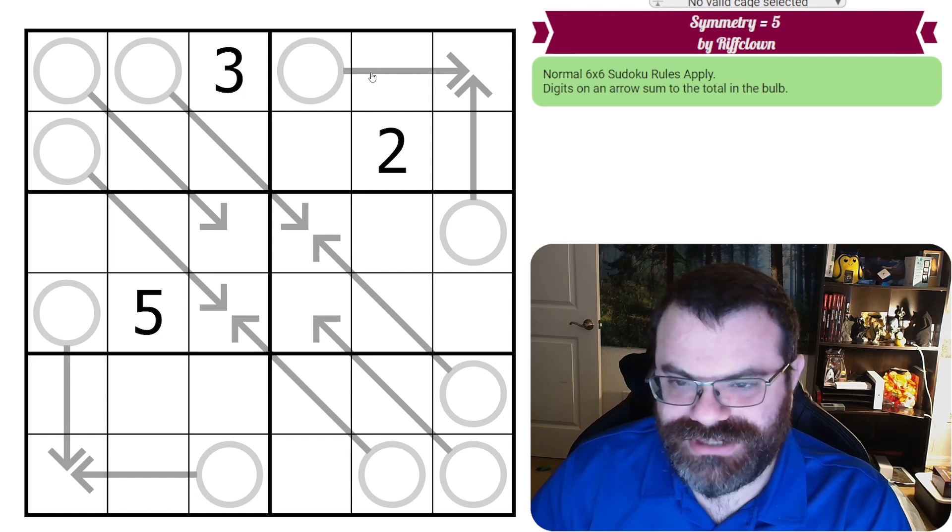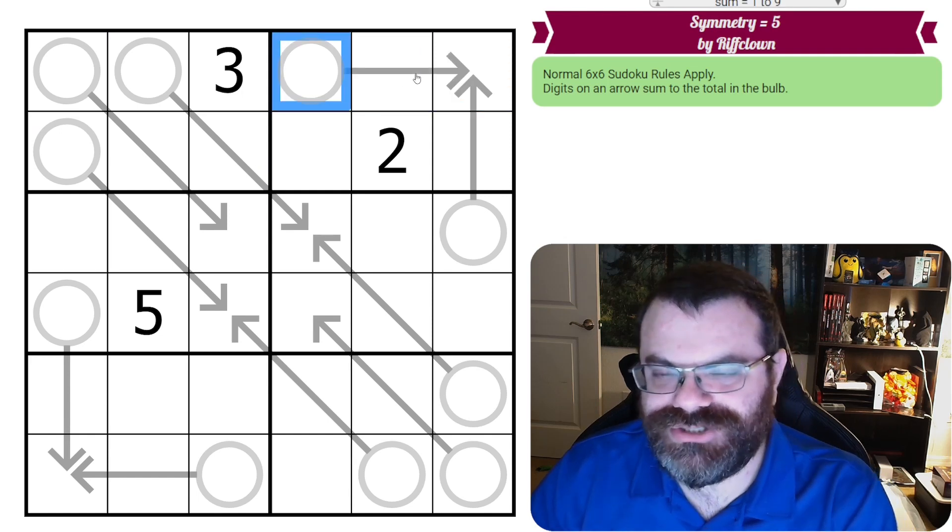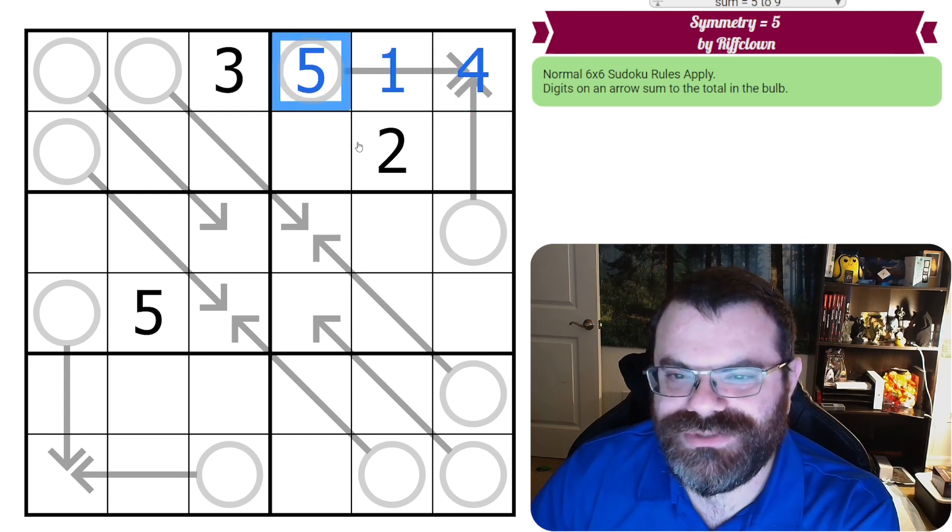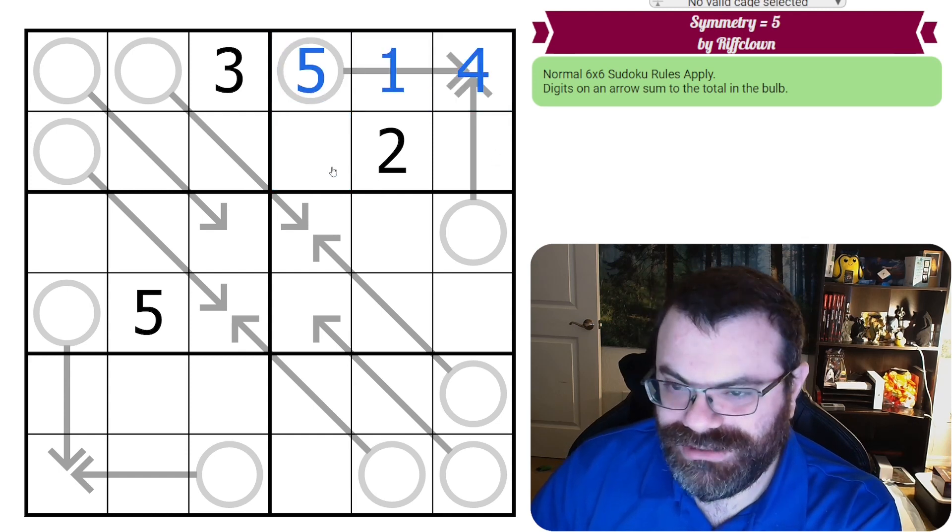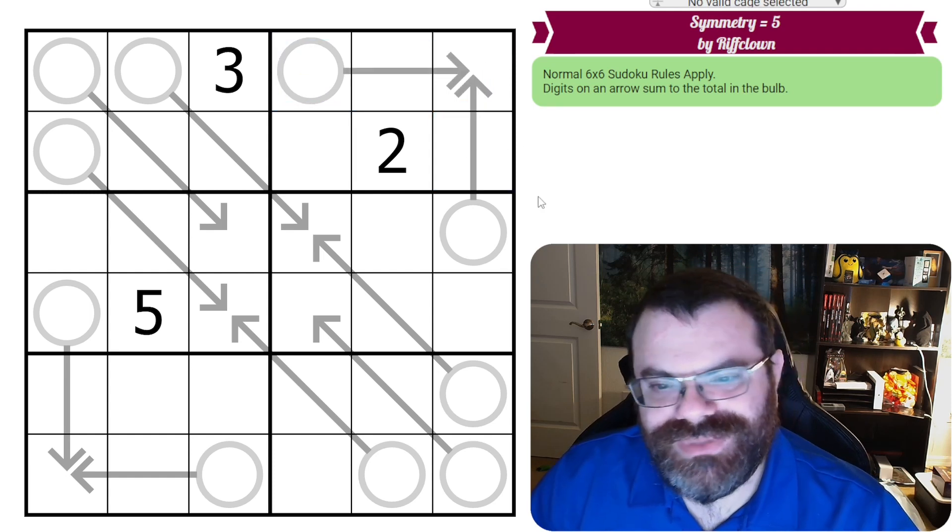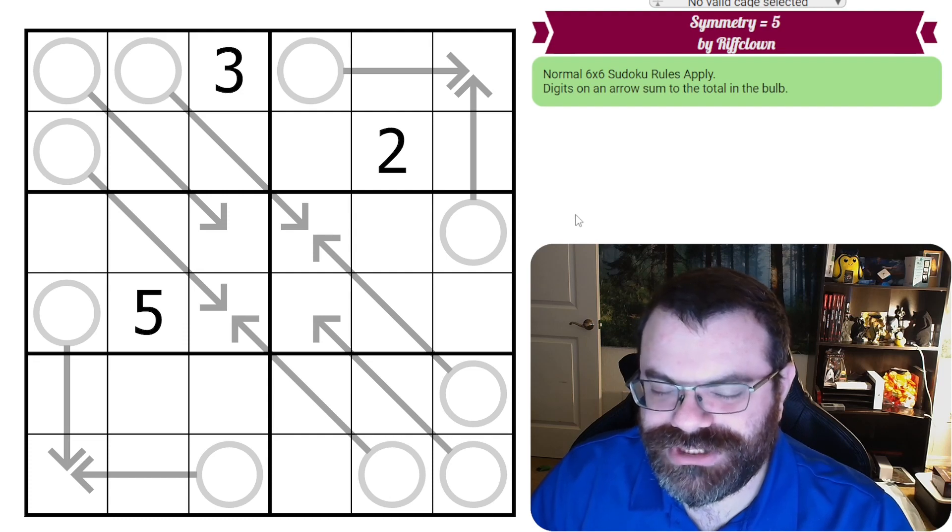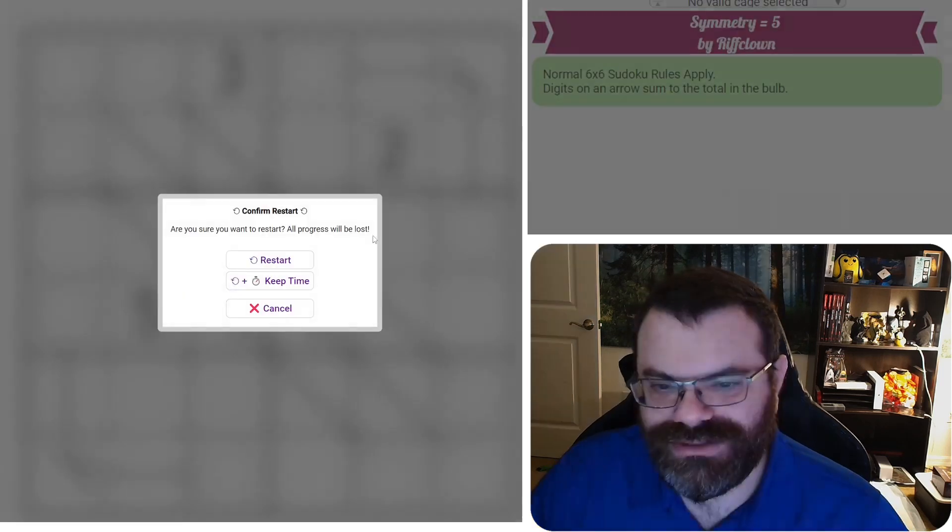And we have standard arrows, so digits on an arrow sum to the value in the attached circle. So if this was 1 and 4, then that would sum to 5. So that's the rules, pretty straightforward today. Definitely give the puzzle a try yourself, the link's in the description, and I'm going to get started right now.